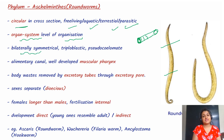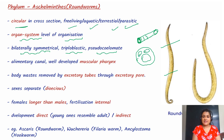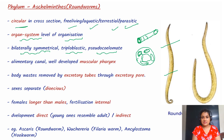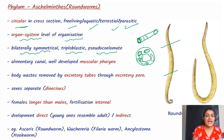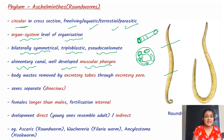They are bilaterally symmetrical, triploblastic, and pseudocoelomate — meaning the mesoderm was scattered and not continuous. The alimentary canal is well developed and a muscular pharynx is present. Body wastes are removed by excretory tubes called the excretory pore.